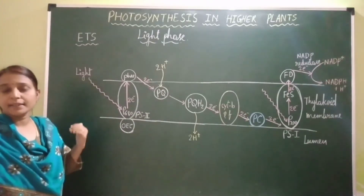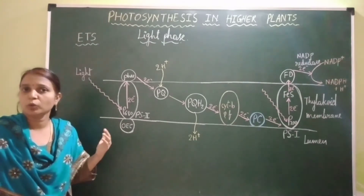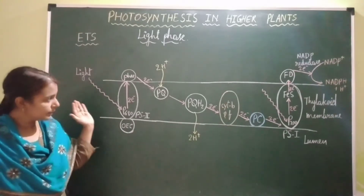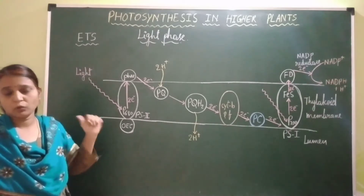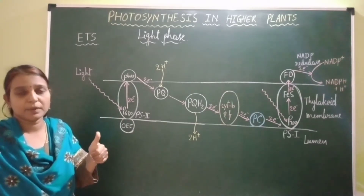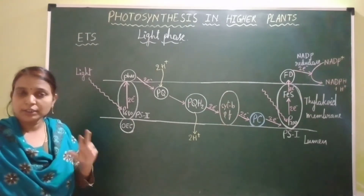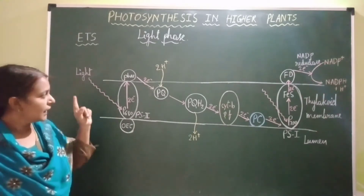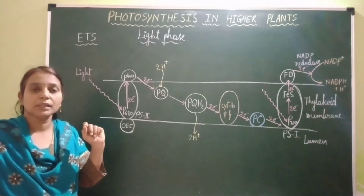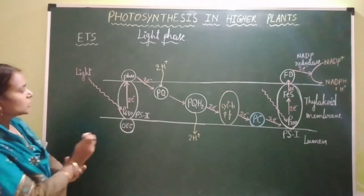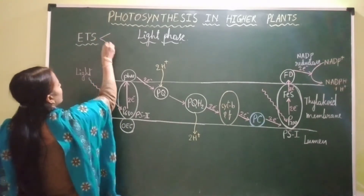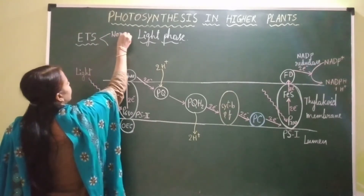Now let's study the electron transport system that occurs inside the thylakoid membrane of the chloroplast. While explaining about this electron transport system, I will be explaining all the steps of light phase. This electron transport system is of two types: non-cyclic electron transport and cyclic electron transport system. Now let's start with non-cyclic electron transport system.